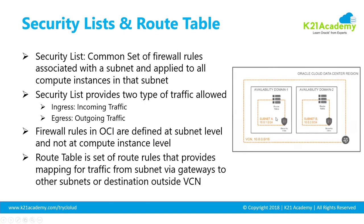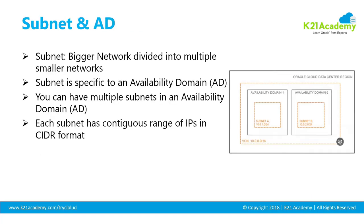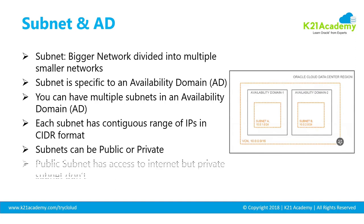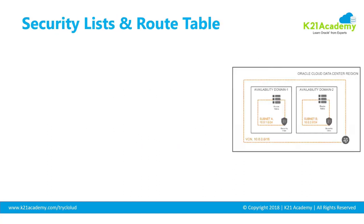Then you have security lists and route tables. Security lists are nothing but firewalls that protect a particular subnet — you create a security list and attach it to a subnet. Anything going into or out of the subnet must be allowed by the security list. Route tables represent how connections going out from that subnet are routed — how requests are routed out based on routing table entries. So security lists act as the firewall, and route tables control outbound routing.